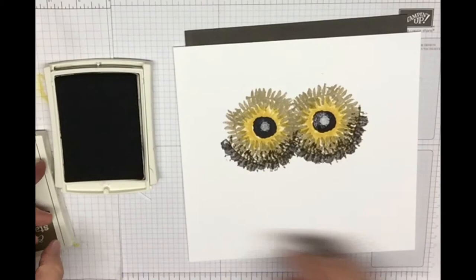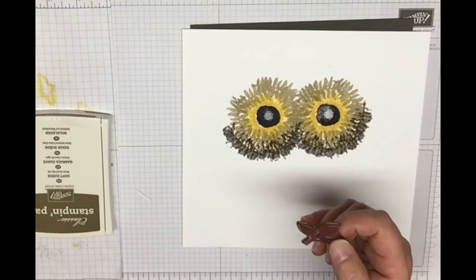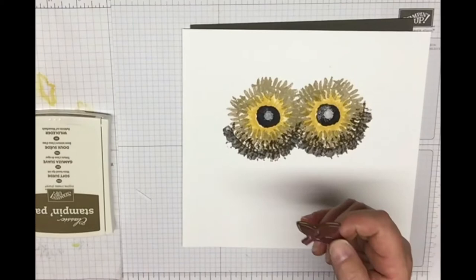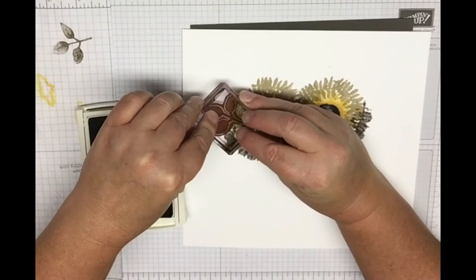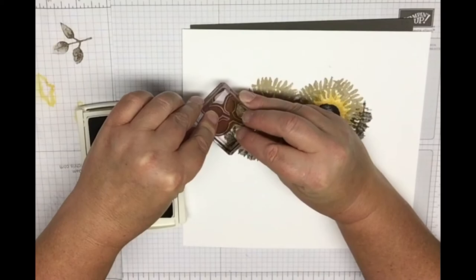The next step is the leaf. You're going to take the more solid leaf and we're going to stamp that in Soft Suede. What you're going to do is every time you stamp it, you ink it, you're going to stamp it once off the paper and then stamp it once here. Then you can fill in some of the spaces.